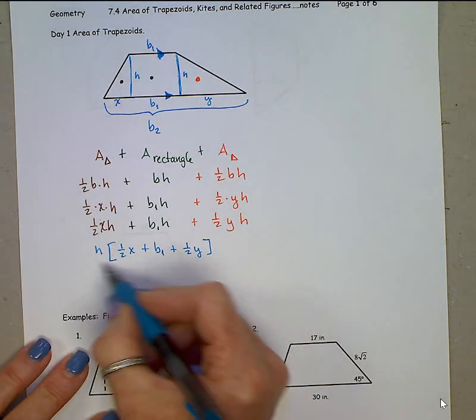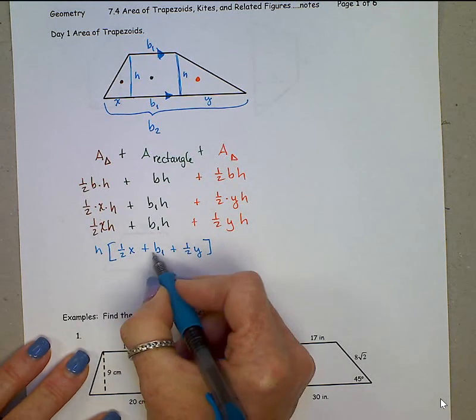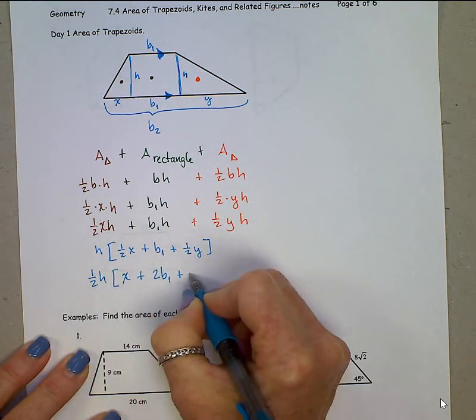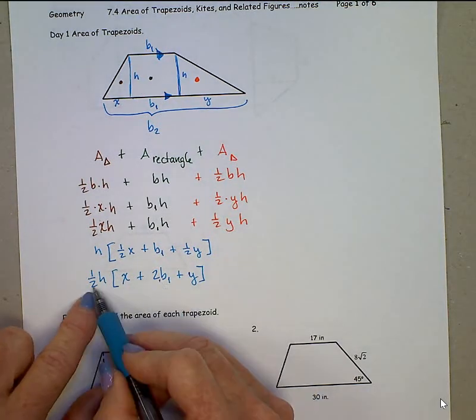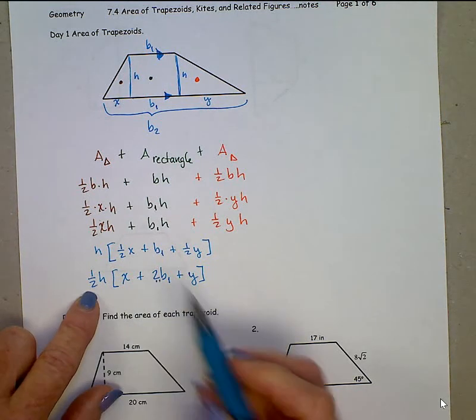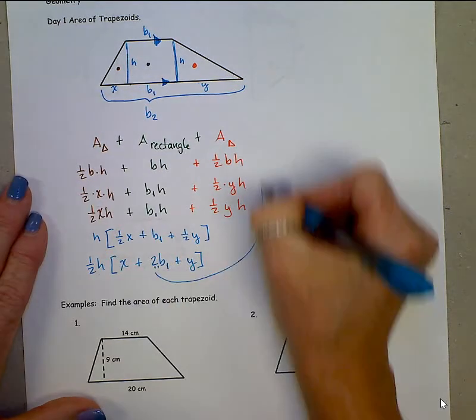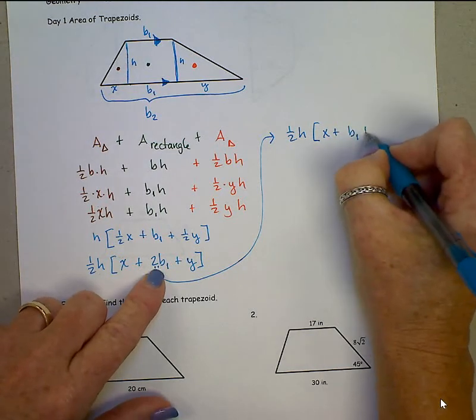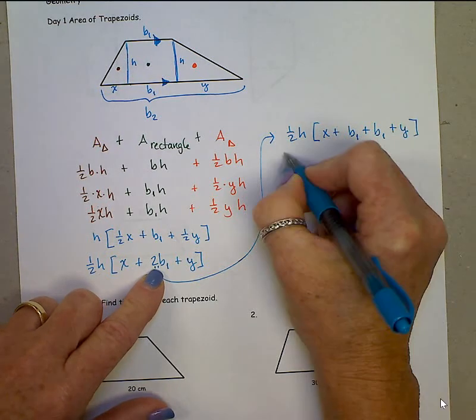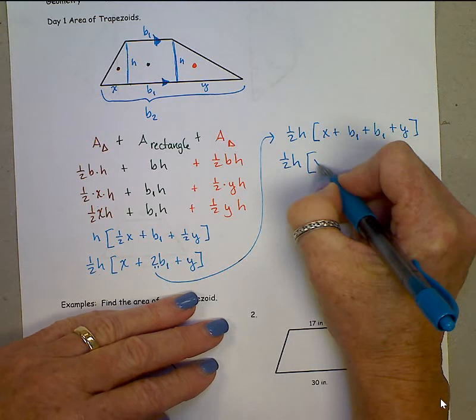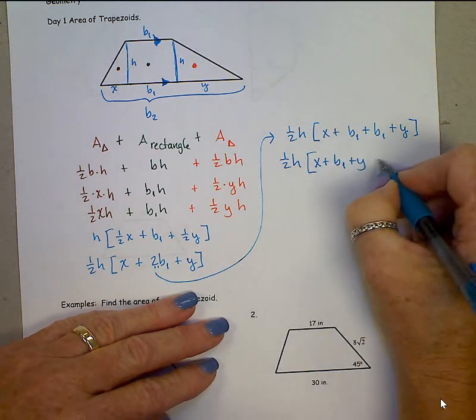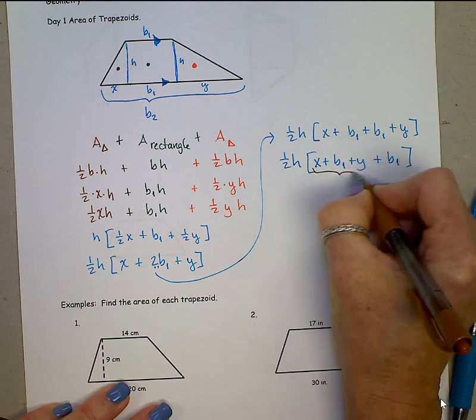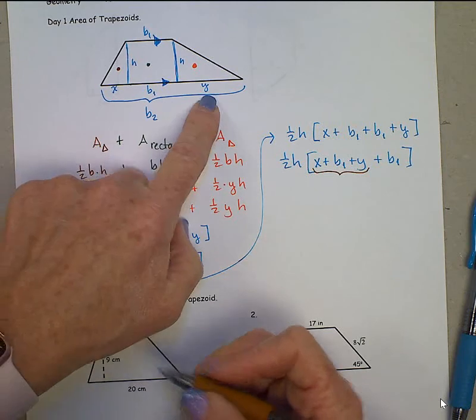Alright, now actually I want to factor out this half as well. Even though there's not a half in here, we can. That leaves us with an x plus here's a 2 base 1 plus a y. And if you're struggling with that, just think about distributive property. Half times 2 is 1. Alright, now we have a little bit more to do here. We have 1 half height x plus, and I'm going to write that 2 base 1 as base 1 plus base 1 plus y. And then I'm going to do some rearranging. x plus base 1 plus a y plus a base 1. Look at this in the original diagram. x plus base 1 plus y. That is base 2.